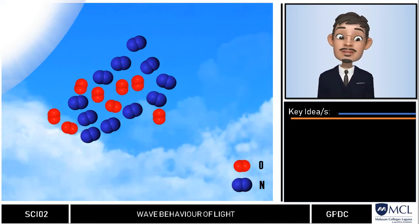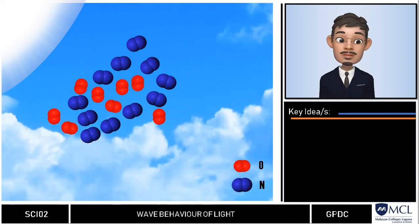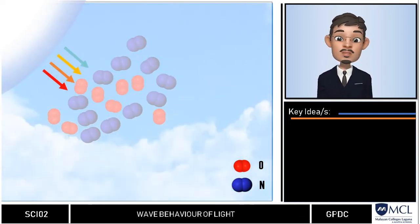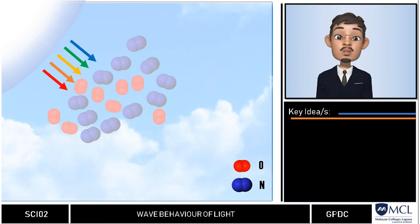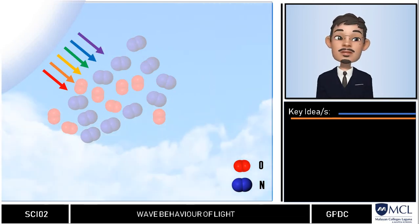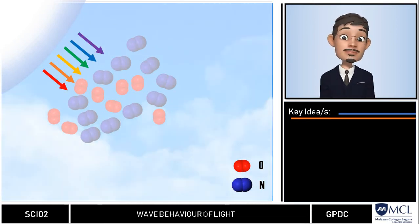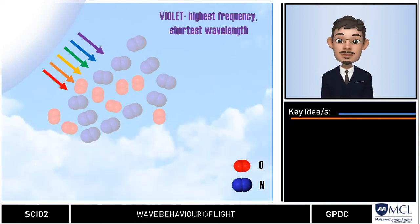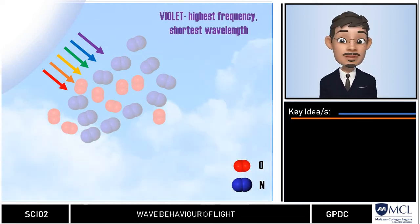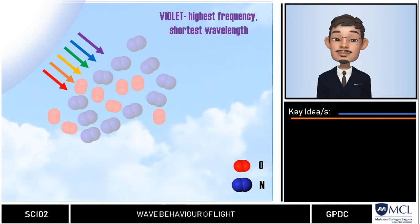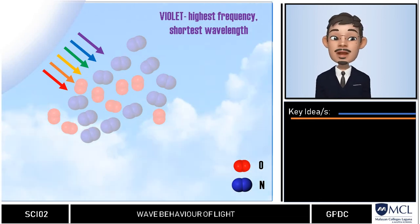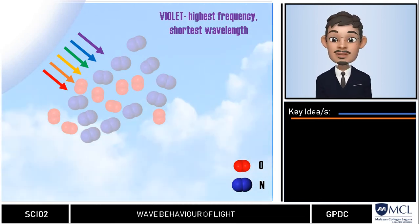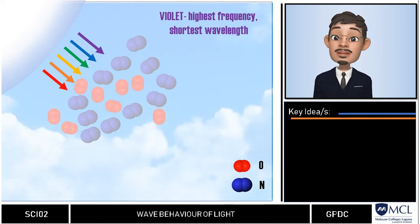Remember the seven colors of the rainbow: red, orange, yellow, green, blue, indigo, and violet. These color components of light are arranged in increasing frequency and decreasing wavelength. Therefore, the highest frequency among the component colors is violet, while the least is red.